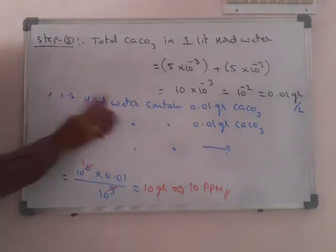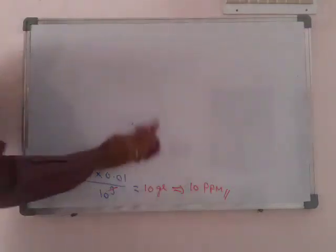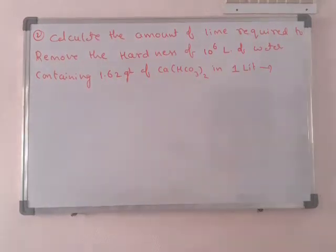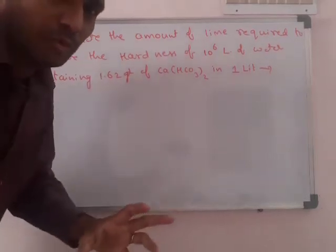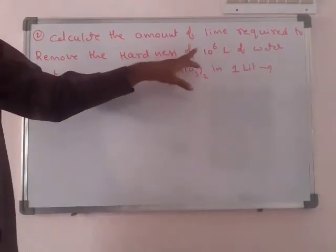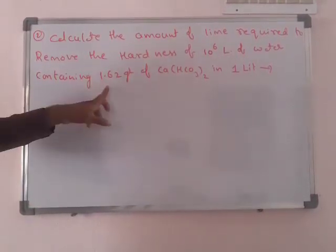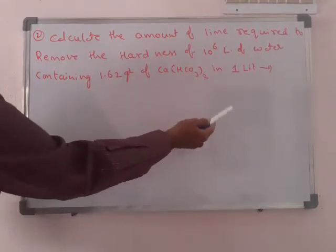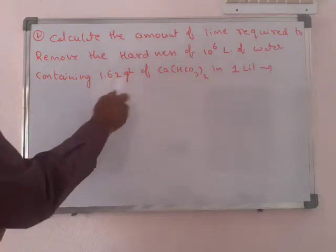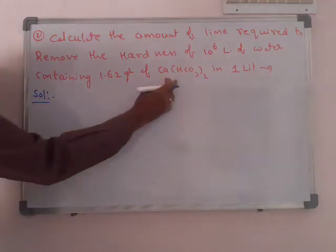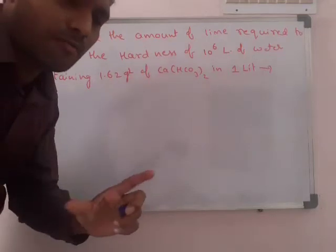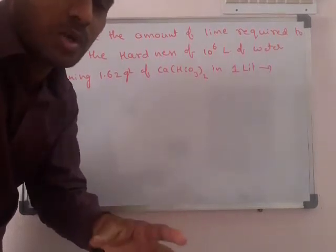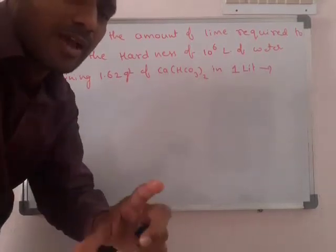Next problem: calculate the amount of lime (CaO) required to remove the hardness of 10⁶ liters of water which contains 1.62 grams of calcium hydrogen carbonate per liter. Calcium hydrogen carbonate causes temporary hardness. Temporary hardness is removed by reacting with lime, so we need to find how much lime is required for 10⁶ liters.